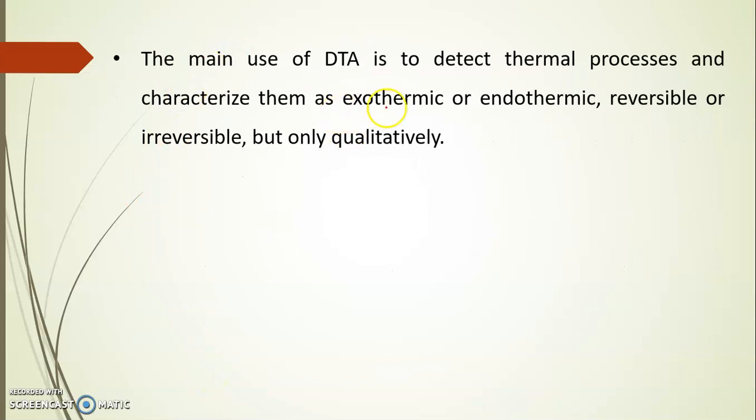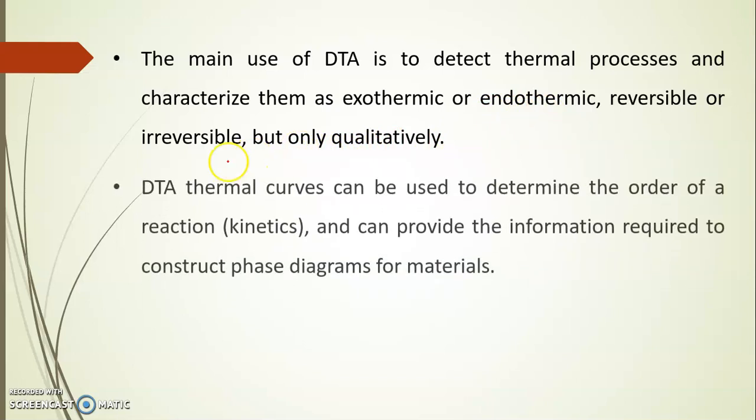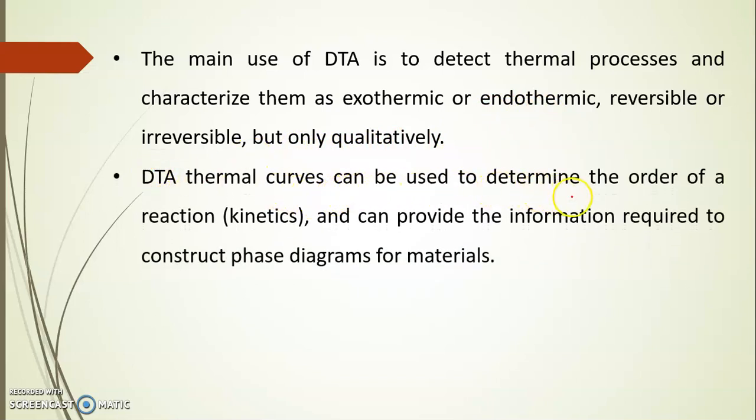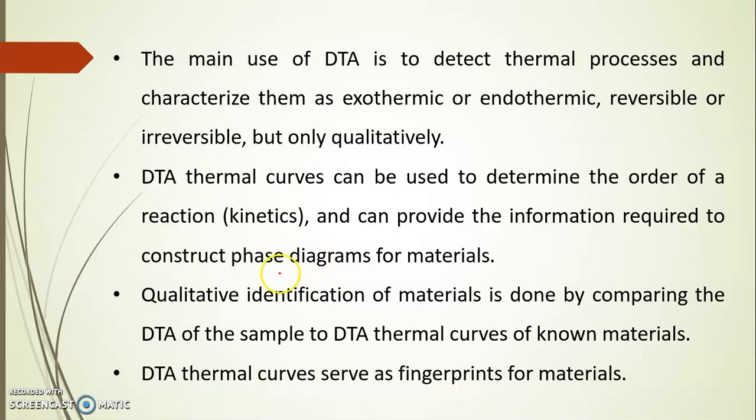The main use of DTA is to detect thermal processes and characterize them as exothermic or endothermic, then reversible or irreversible, but only for qualitative analysis. DTA thermal curves can be used to determine the order of a reaction or pharmacokinetics of the drug and it can provide the information required to construct phase diagrams for the material or substance. Qualitative identification of materials is done by comparing the DTA of the sample to DTA thermal curves of known materials. DTA thermal curves serve as a fingerprint for the materials or drug compound.